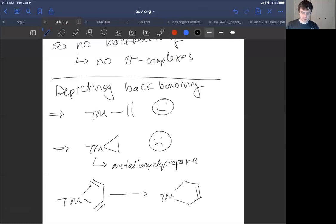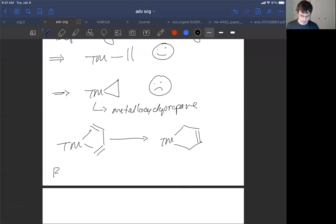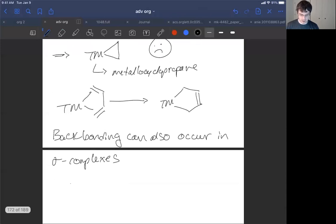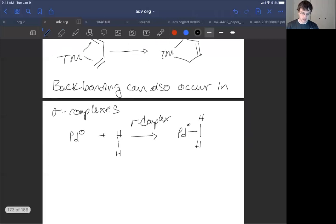Backbonding can also occur in another type of bond complex, which is a sigma complex. That is, if you take palladium zero and react it with H2, which I'm going to show is drawn this way, you can form a sigma complex. The sigma complex looks like this. Now that's an important first step into the palladium catalyzed hydrogenation, because we could do backbonding from this complex to give rise to this species.